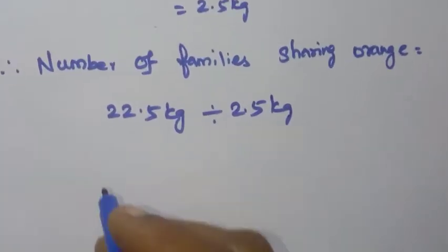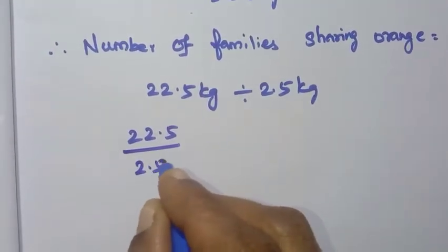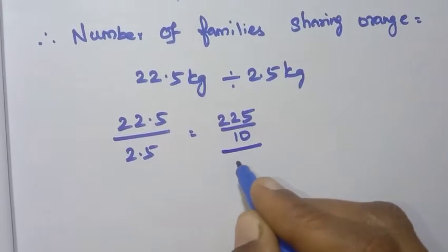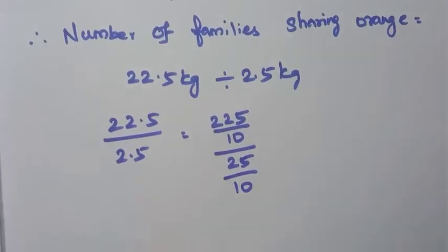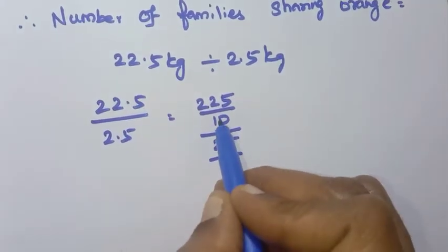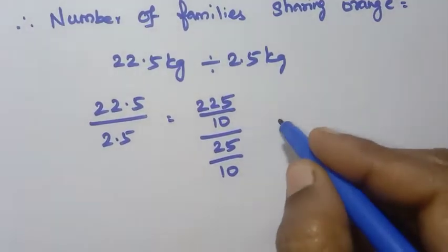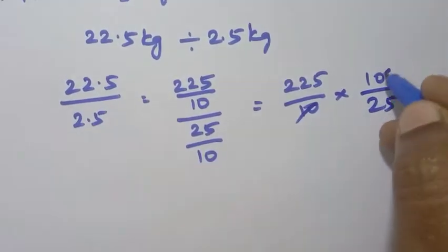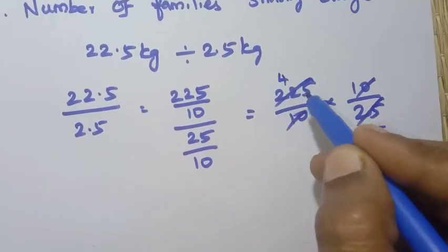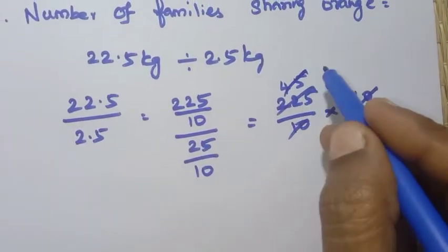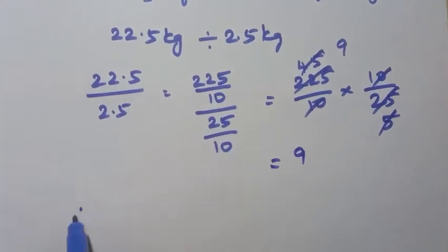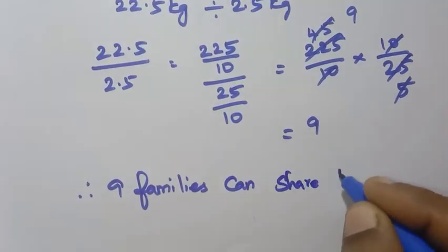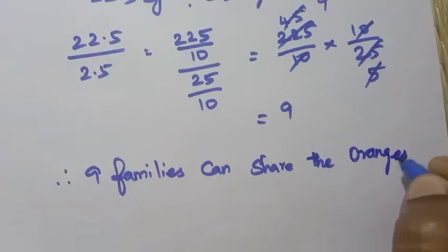Number of families = 22.5 divided by 2.5. Converting: 225 divided by 25. We cancel the 10s, giving 225 by 25. Then 5 fives are 25, 5 fours are 20, 5 fives are 25, 5 nines are 45. The answer is 9. Therefore 9 families can share the oranges.